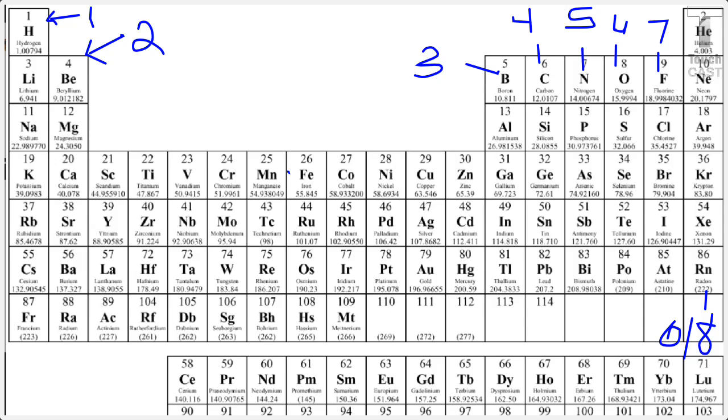Are you noticing a pattern? Group 15 is the nitrogen family. And elements in this group, you guessed it, have 5 valence electrons. Group 16 is the oxygen family. And these elements have 6 valence electrons.